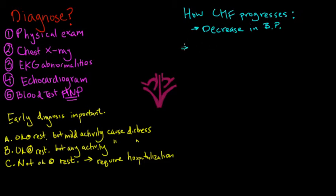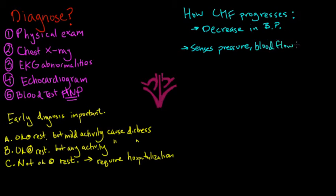Our body constantly senses pressure. It has pressure receptors in the neck, and the brain is going to sense any changes in that pressure — whether it's up or down — and act accordingly. It's also going to detect the amount of blood flow to the kidneys. These are the two main ways our body senses blood pressure throughout the body. In a normal person, if there's a decrease in blood pressure, the brain thinks it's because we are actually losing blood.